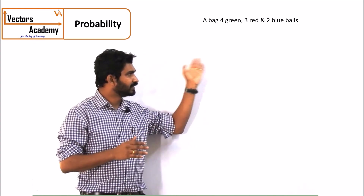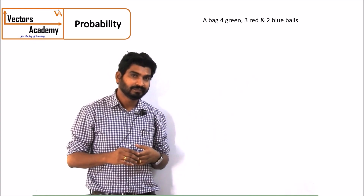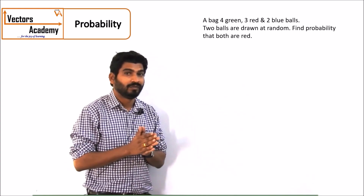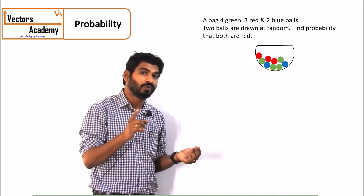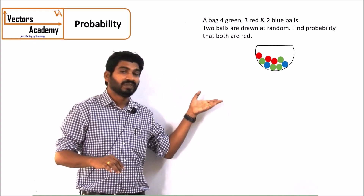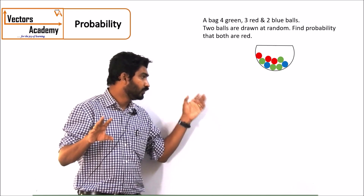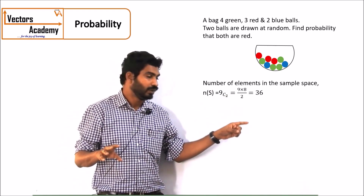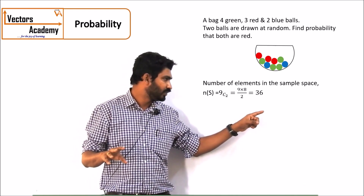Now we will modify the question a little bit. We have the same bag with the same number of balls. This time, 2 balls are drawn at random and we have to find the probability that both are red. This is solved using combinations. The sample space is 9C2, selecting 2 balls from 9, which gives 36.